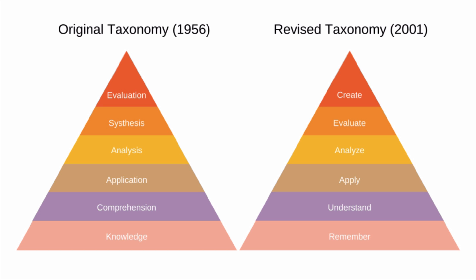The first thing to notice about Bloom's Taxonomy is that it has two versions. The version on the left is the original 1950s version created by Bloom, and the version on the right is Bloom's revised taxonomy, created in 2001 by Lauren Anderson and others — Anderson being a former student of Bloom's. We will focus on the revised taxonomy, but everything covered could equally be applied to the original. As you can see, Bloom's taxonomy consists of six levels.